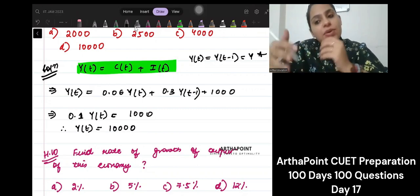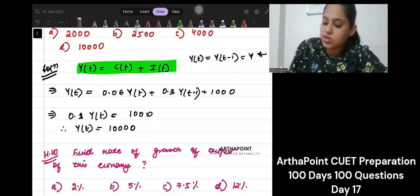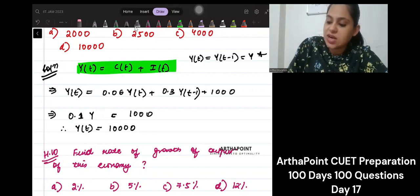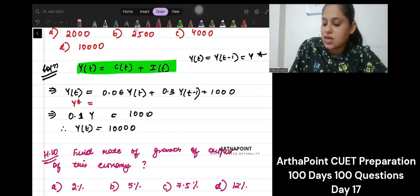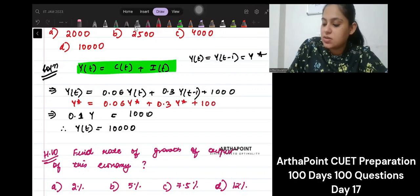Because every time period, Y's value is the same. So what you can do is everywhere, you can just replace it with Y star. So you can say Y star is equal to 0.6Y star plus 0.3Y star plus 1000.